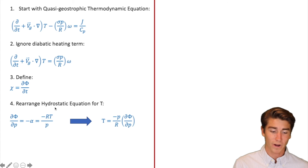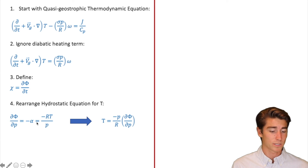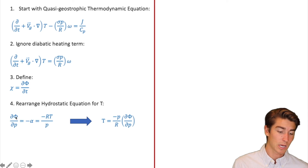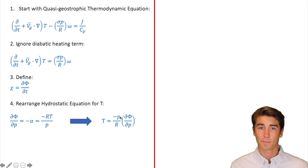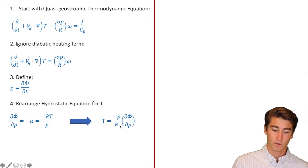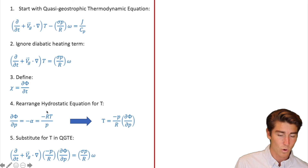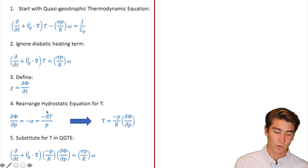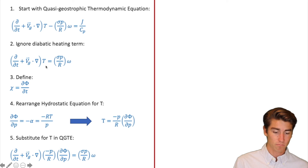In step four we are going to rearrange the hydrostatic equation for T. We just have d-phi/dp equals negative RT over P. We want that T by itself, so the P is going to come over to this side and then negative R is going to come down to this side. Here you see that's exactly what happens: negative P on top, R on the bottom. Next, we're going to substitute for that T in the quasi-geostrophic thermodynamic equation with what we just solved for T. So that T just becomes that.